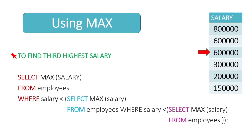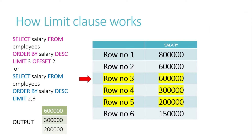Now, what if they ask you to find the third highest salary using the MAX function? Then we have to add one more inner query, exactly the same as before. The innermost query gives the highest salary, the second innermost gives the second highest, and the final outer query gives the third highest. But this is not a good approach — if you want the fourth or fifth highest, the query becomes very complex. So we will use another approach using the LIMIT clause.